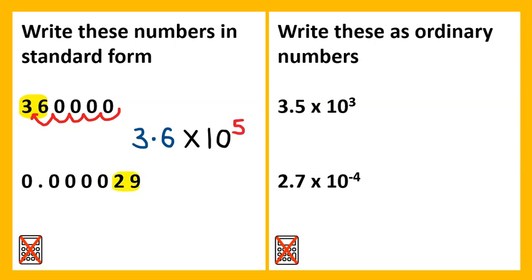On the next example, the significant figures are 2 and 9. So 2.9 times 10 to the power of 1, 2, 3, 4, negative 5.